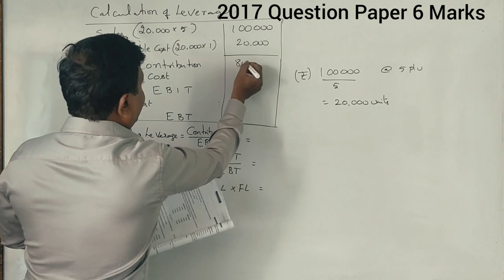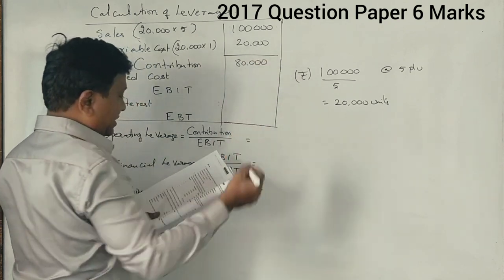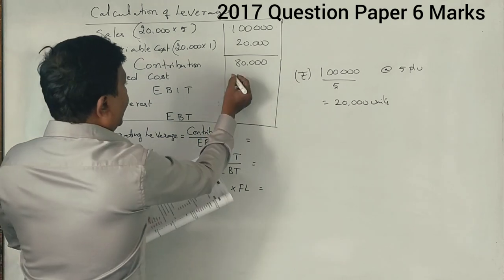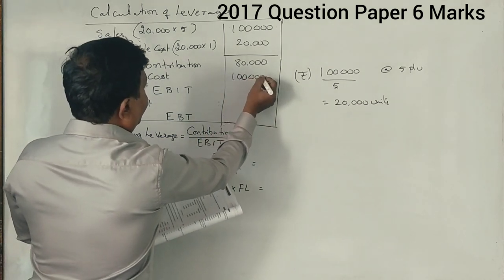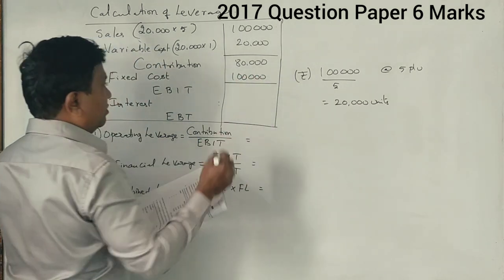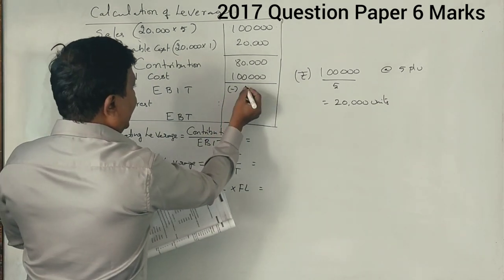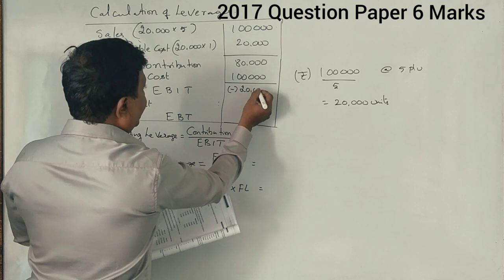What is the contribution? 80,000 rupees. And fixed cost is given as 1 lakh rupees. Now we are getting earnings before interest and tax as negative 20,000 rupees.